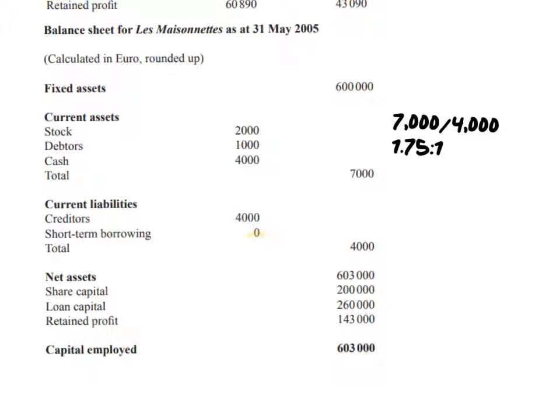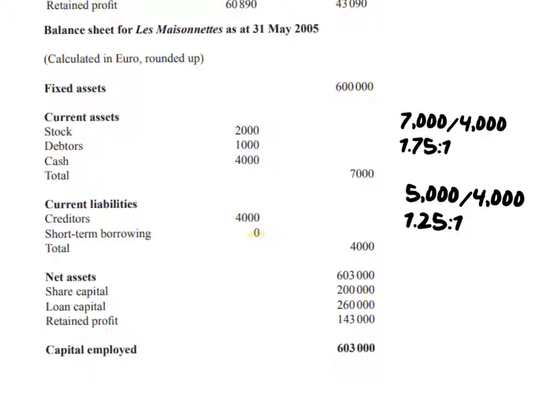The 2005 current ratio is 1.75 to 1, meaning for every 1 euro of current liability they have 1.75 euros to pay it off — a very strong, highly liquid position. For the acid test ratio, deducting stock leaves 5,000 euros of current assets, giving 5,000 divided by 4,000, which is 1.25 to 1. Even without stock they are still liquid, which further emphasises how strong their financial position is at this point, though there are consequences to consider as well.